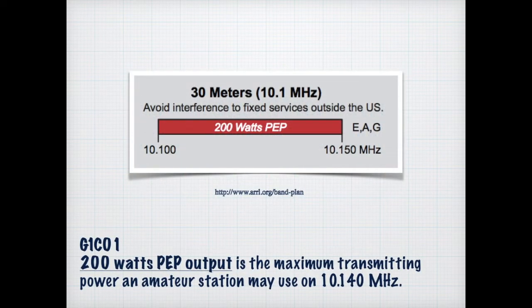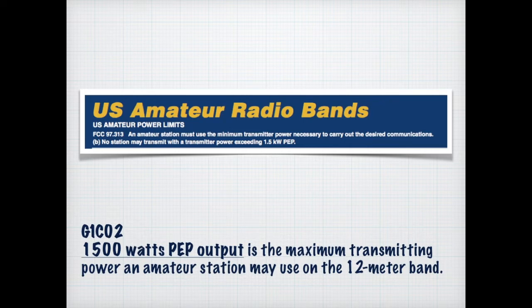On the 30-meter band, 200 watts peak envelope power output is the maximum transmitting power an amateur station may use on 10.140 megahertz. This information comes directly from the ARRL band plan. On the 12-meter band, 1,500 watts peak envelope power is the maximum transmitting power an amateur station may use.